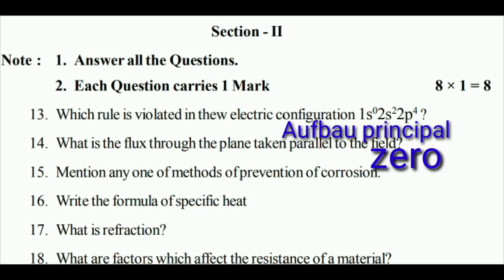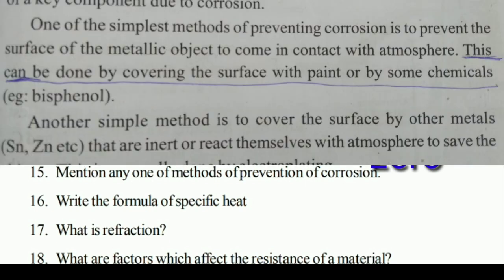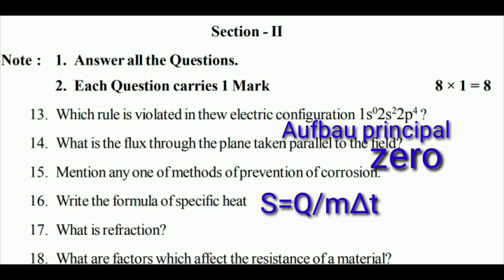What is the flux through a plane taken parallel to the field? Zero. Mention any one method of prevention of corrosion - this can be done by covering the surface with paint or some chemicals. Write the formula of specific heat: s = Q / m delta T.